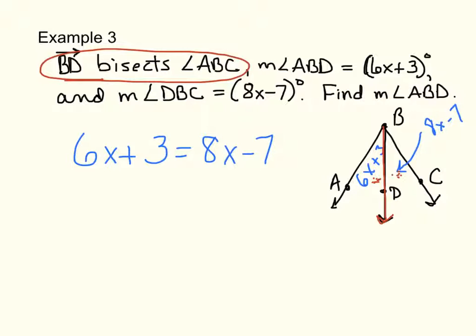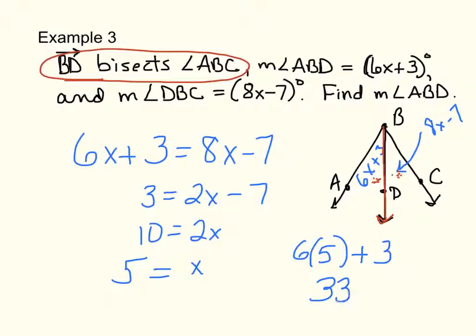If you did it, we can move the 6X over. We can move the minus 7 over. Divide by 2. X equals 5. Now, if X equals 5, I'm still not done. I have to find the measure of angle ABD so I can plug the 5 in. And that means the measure of angle ABD equals 33 degrees.